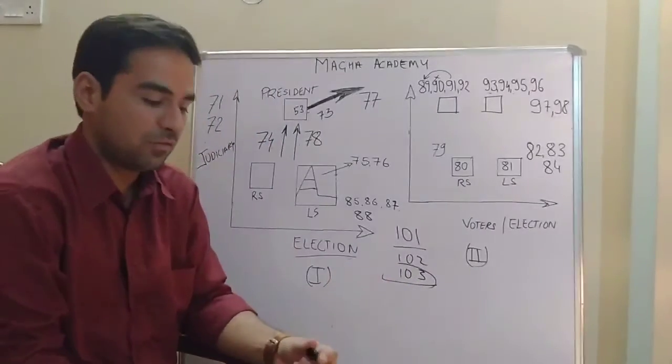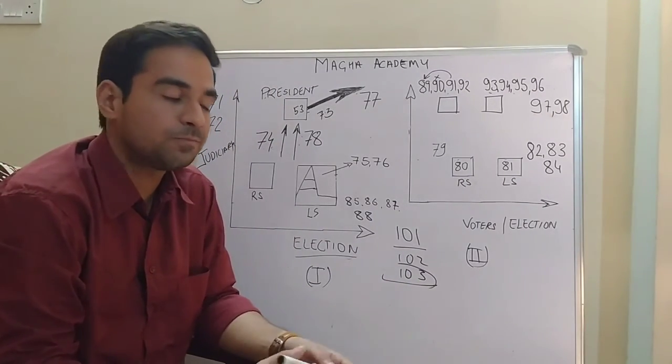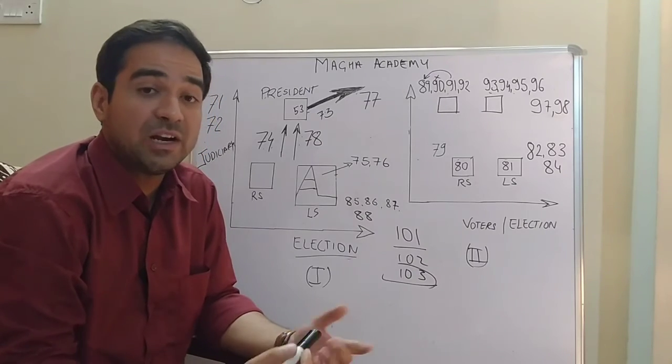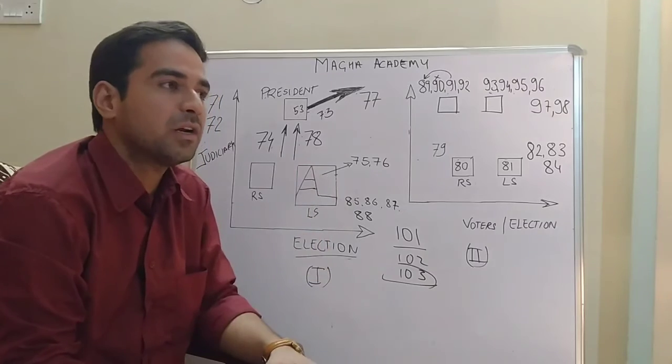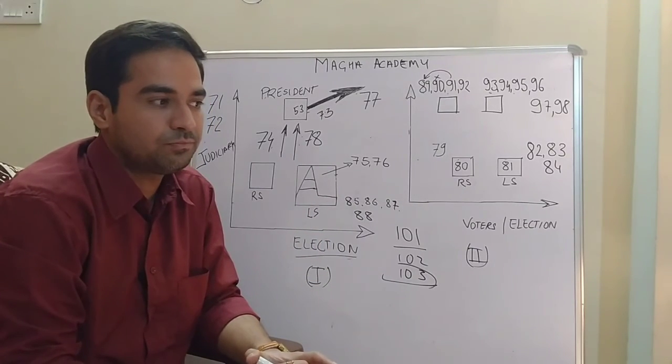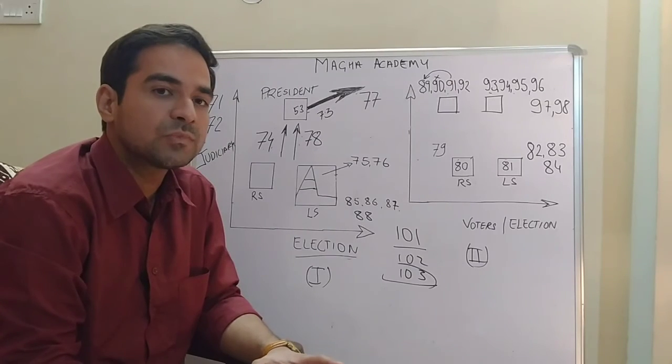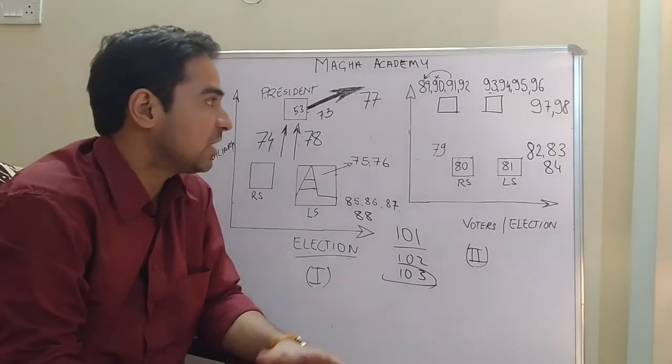Article 104: penalty. Article 105 is a very important article - rights and privileges of the members. And Article 106 is salary of the members.